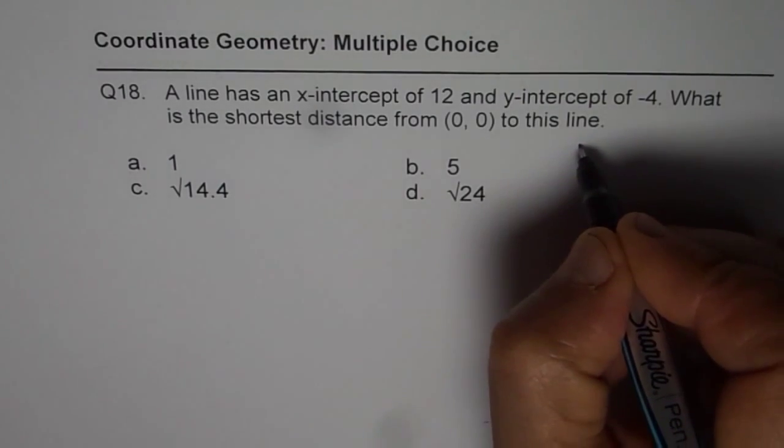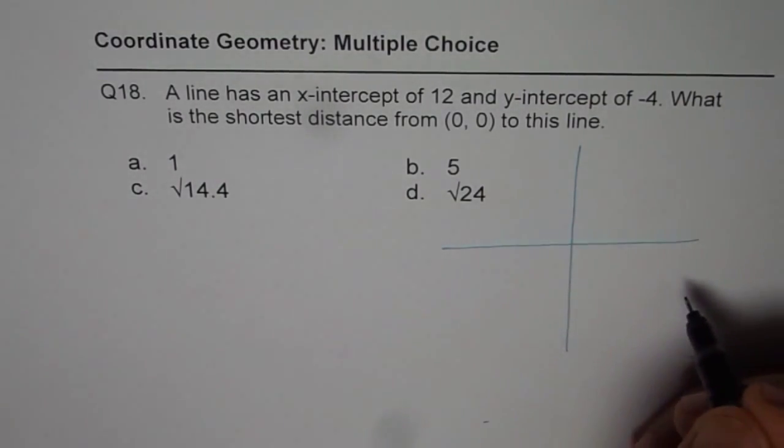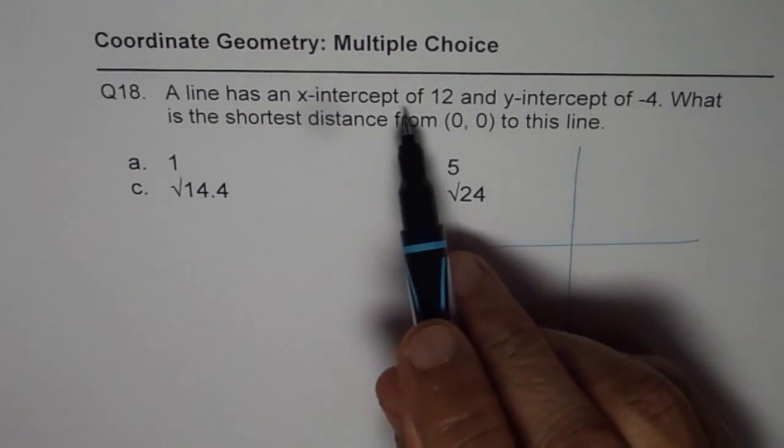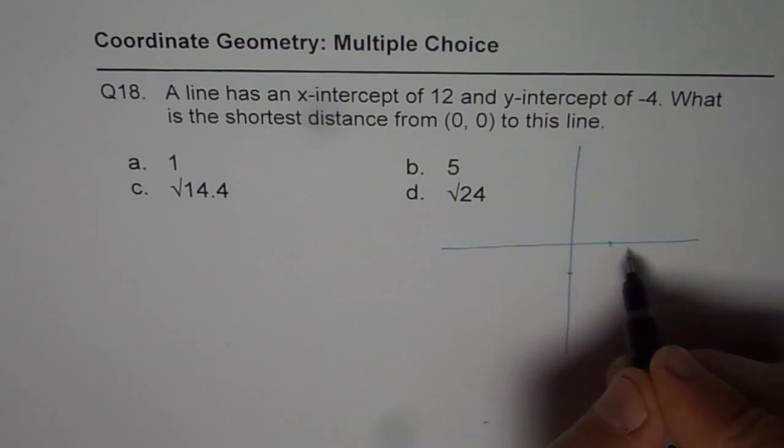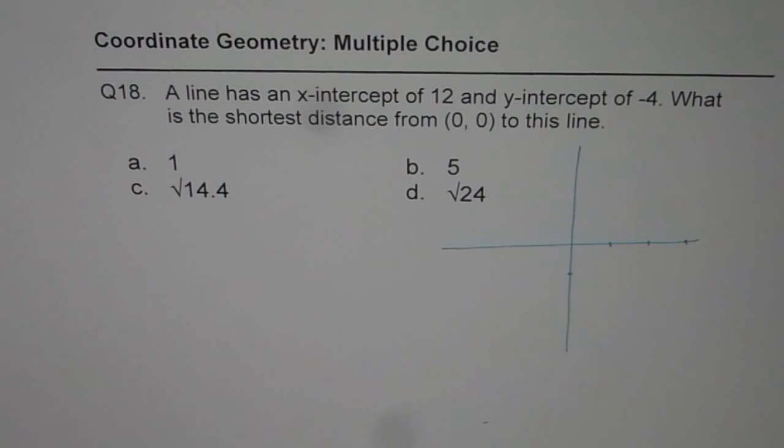Here is my solution. Let's sketch this graph for the situation. X-intercept is 12, y-intercept is minus 4. This is units of 4. So we have 1, 2, 3. That is the kind of situation.